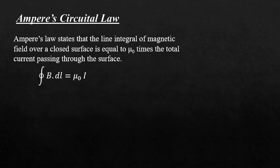Ampere's Circuital Law gives the relationship between current and magnetic field. It states that the line integral of magnetic field over a closed surface is equal to µ0 times the total current passing through the surface. Mathematically, the integral of B dot dL is equal to µ0 times the total current I.